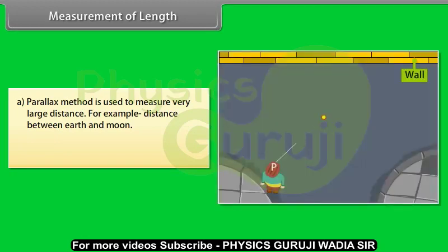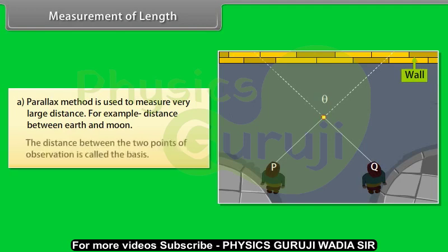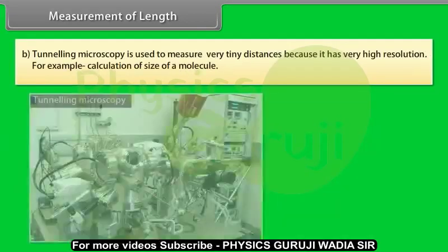Let us understand with an example. A girl is observing the rod against a wall from two different points P and Q. She notices that the position of the rod seems to change with respect to the wall. This is known as parallax. The distance between P and Q is called basis.